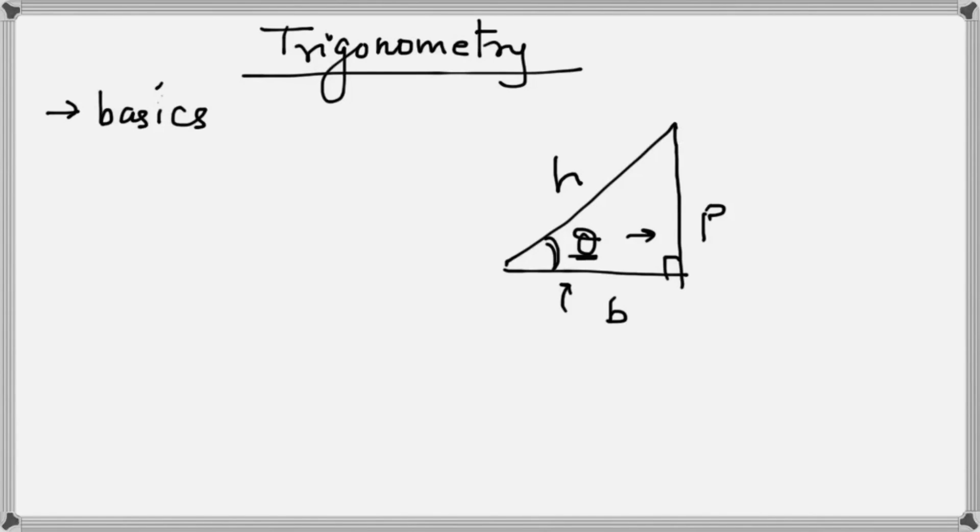Here are the trigonometric ratios that you need to remember, and you obviously already do remember these, but I will write them anyway. sin θ equals perpendicular by hypotenuse, cos θ equals base by hypotenuse.